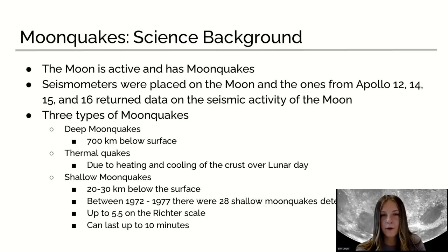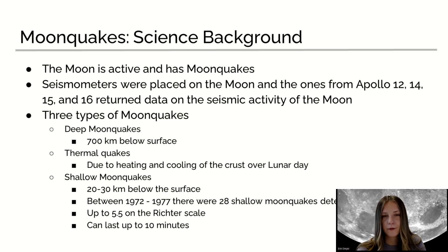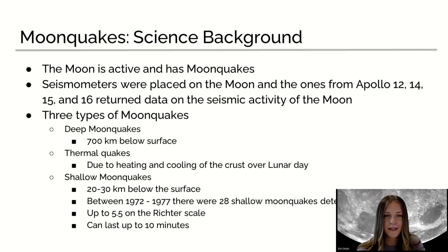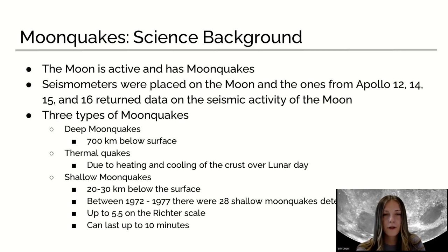A little background information on moon quakes: the moon is active, and there are moon quakes. There are three different types of moon quakes: deep moon quakes, thermal moon quakes, and shallow moon quakes. Deep moon quakes range from 700 kilometers below the surface. Thermal moon quakes occur due to heating and cooling of the crust over the lunar day.